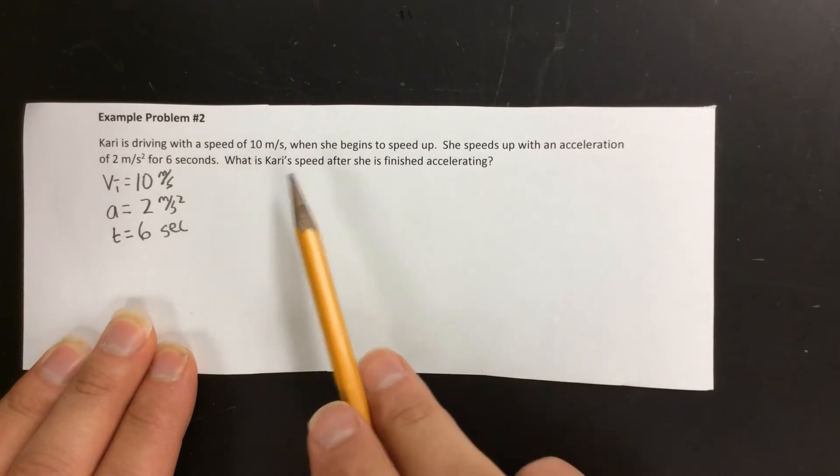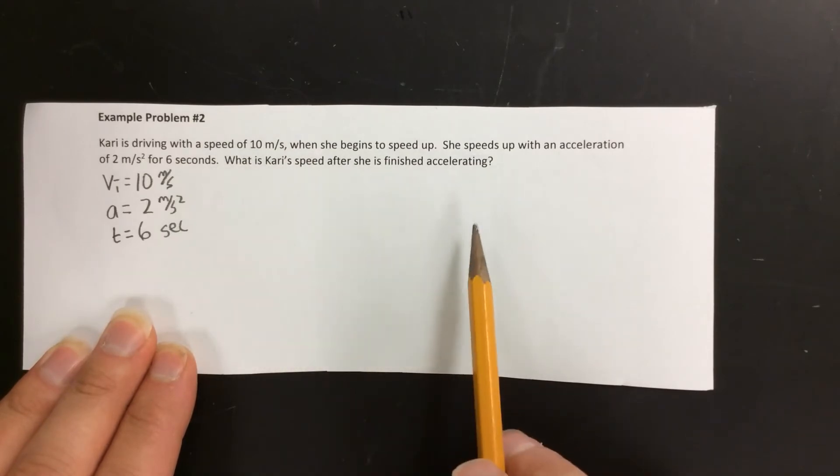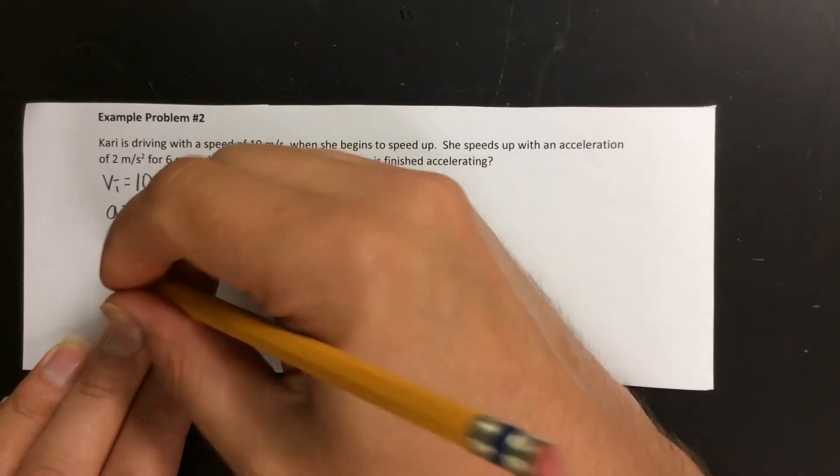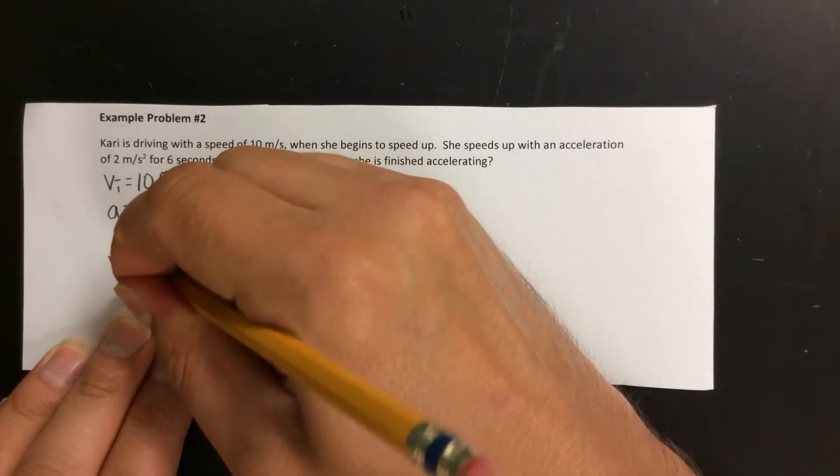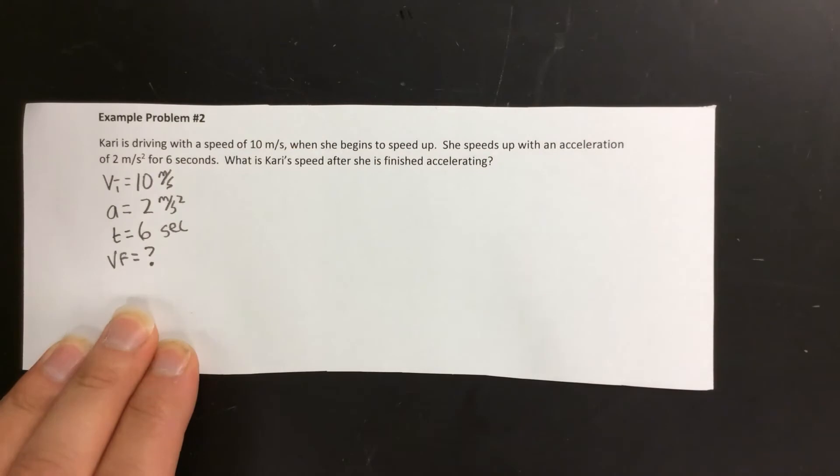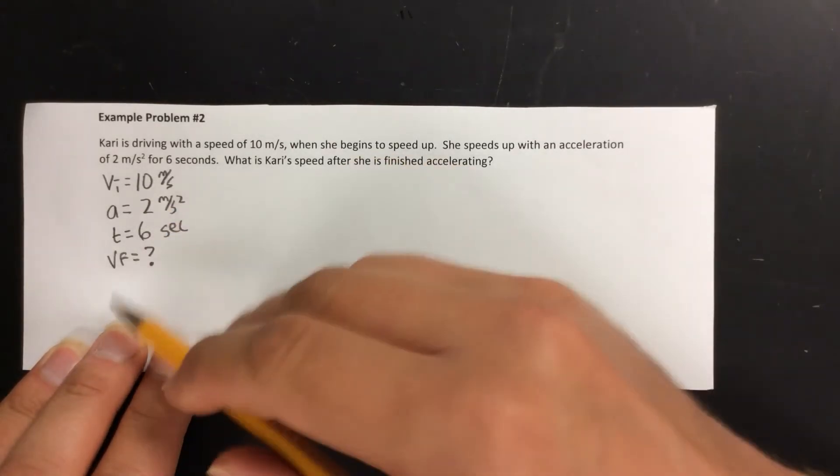And finally it asks for her speed after she finished accelerating. Well that would be her velocity at the end of the problem. So that would be our VF. So VF is our question mark. Now you notice in this formula there's four different variables, and if I tell you any three you can calculate what the fourth one must be. In the first example I had to find the acceleration which is the easiest, but in this one you're going to have to do a bit of algebra.